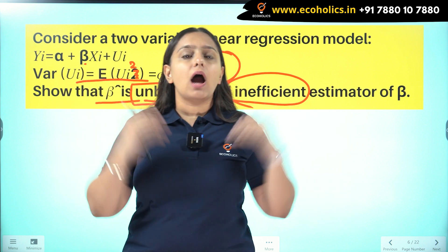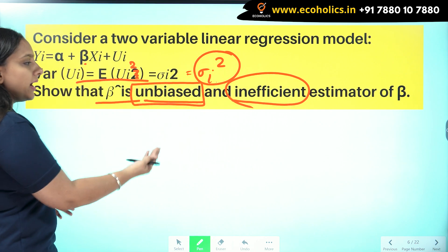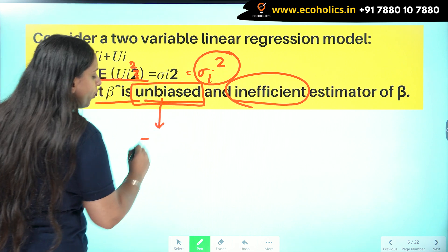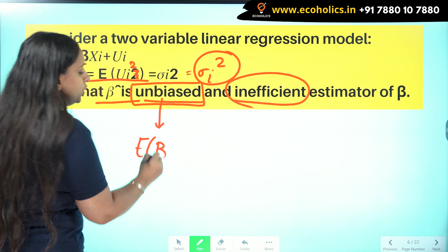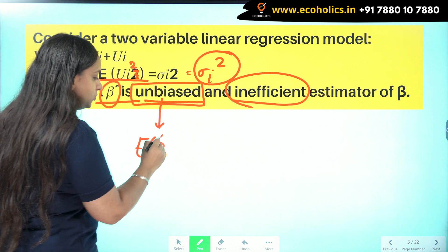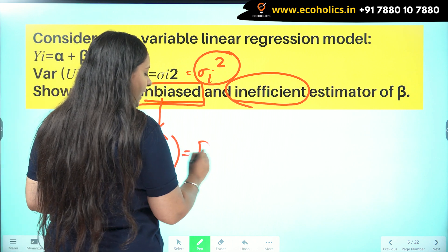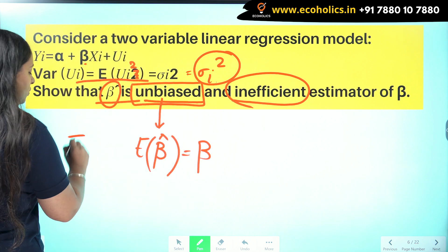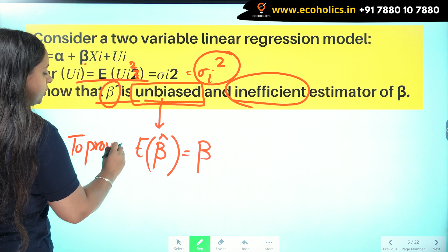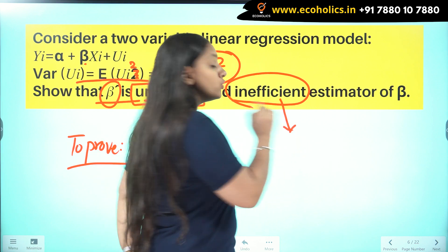Whenever a question asks you to check for biasedness — whether it is unbiased or biased — always check the expected value. Here I have to prove beta hat is unbiased, so I need to prove that the expected value of beta hat equals beta.